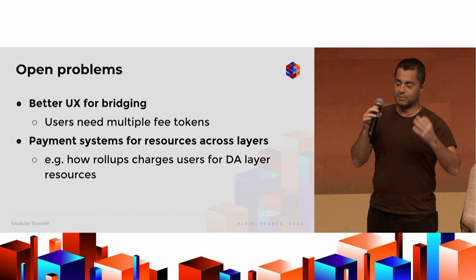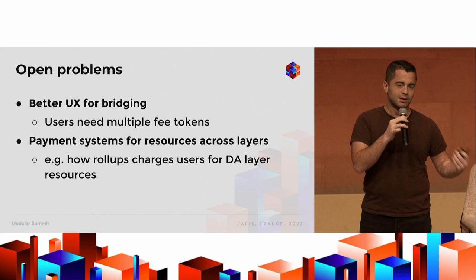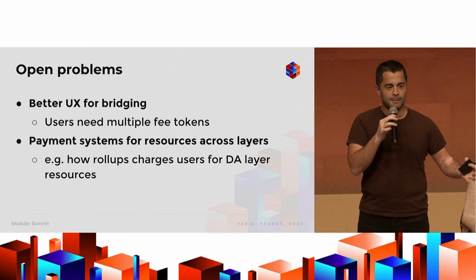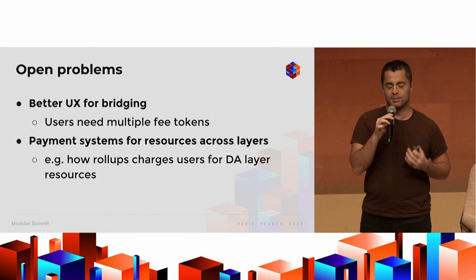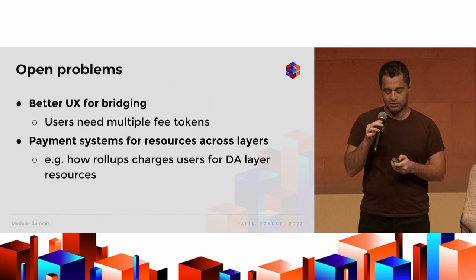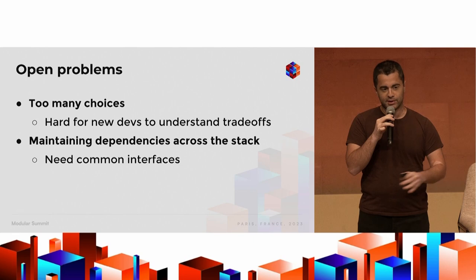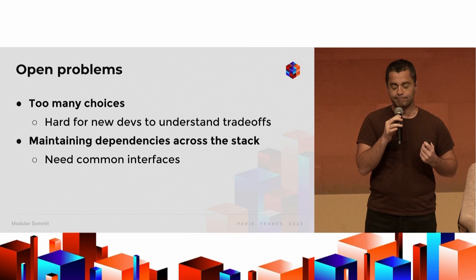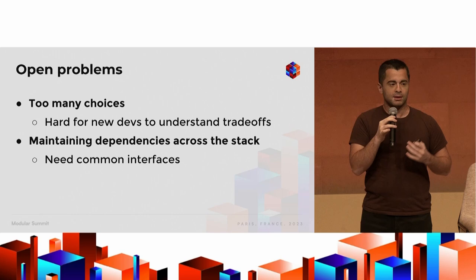We also need tooling for custody and payment systems for roll-ups to access resources across the stack. For example, a roll-up that needs to pay the DA layer or settlement layer needs a way to hold different tokens or do exchanges easily without developers having to maintain too much wallet infrastructure and pricing mechanisms. There's also a lot of choice for developers, which can be very hard — understanding the trade-offs between different execution environments, settlement layers, and DA layers. We need to do a better job educating developers on the trade-offs between different components in the stack.